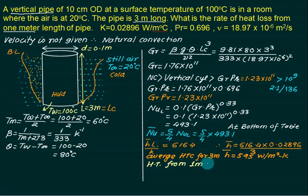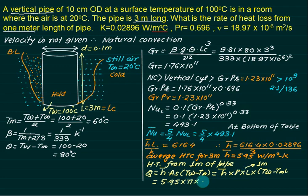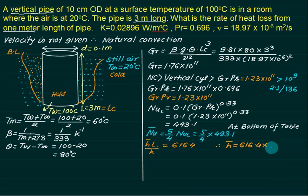Average heat transfer coefficient: h_bar = Nu_bar × k / Lc = 616.4 × k / 3. With k = 0.02896, h_bar = 5.95 W/m²K over 3 meters. For heat transfer from only 1 meter, use area = π × D × 1 m: Q = h_bar × π × D × 1 × (Tw − T∞) = 5.93 × π × 0.1 × 1 × (100 − 20) = 149.54 W.